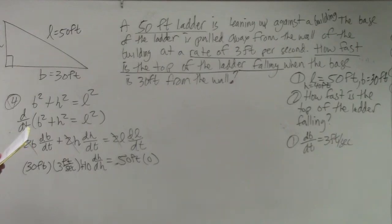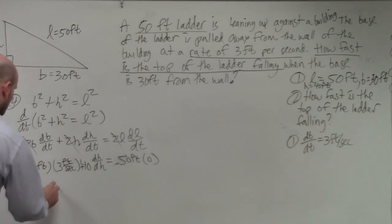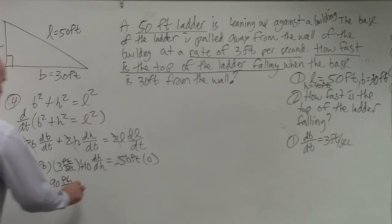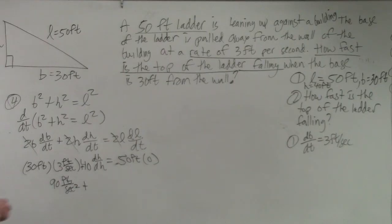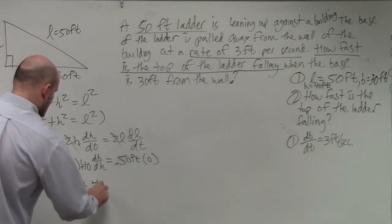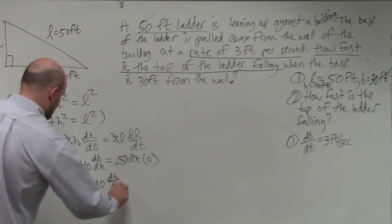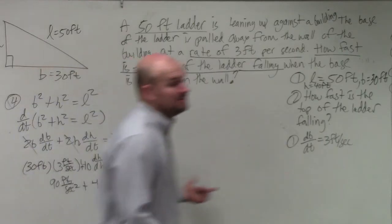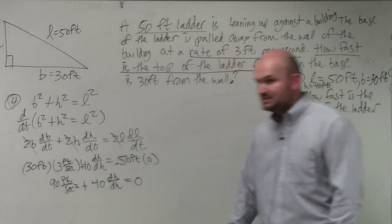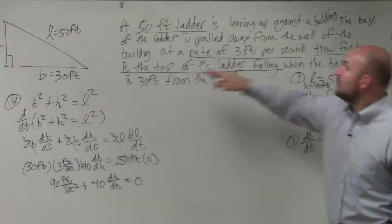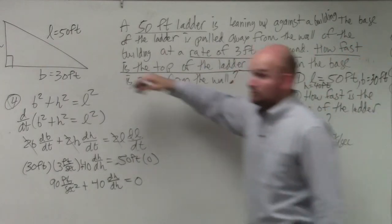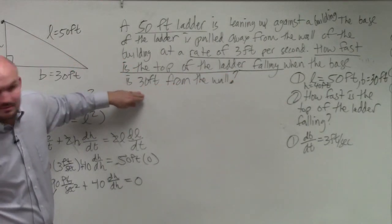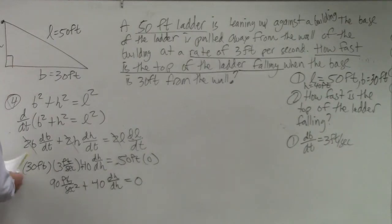What we end up with is 90 feet per second on one side, plus 40 dH/dt, that would be 80, equals 0. Now we simply need to solve for dH/dt, because that's what they're asking — how fast is the top of the ladder, which is your height, falling when the base is 30 feet from the wall.